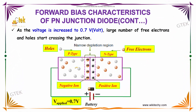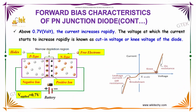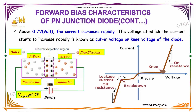As the voltage is increased to 0.7 volts, a large number of electrons and holes start crossing the junction. The P-type and N-type semiconductors, with their positive ions, negative ions, holes, and electrons, are shown here. Once the voltage crosses 0.7 volts, large numbers of electrons and holes start moving across the junction, and the current increases rapidly. The voltage at which the current starts to increase rapidly is called the cut-in voltage or knee voltage of the diode.